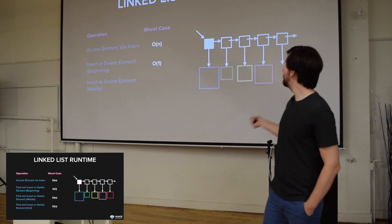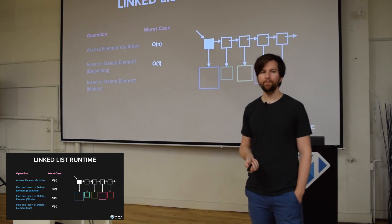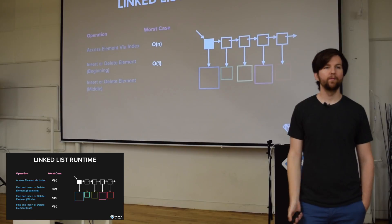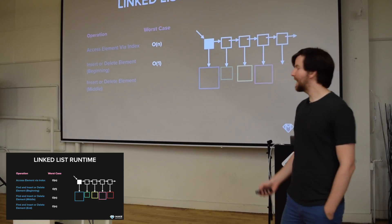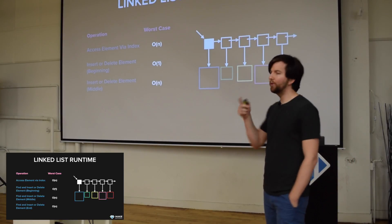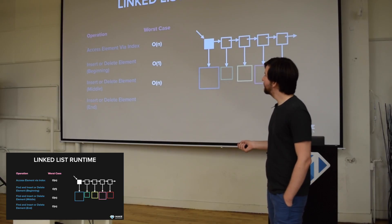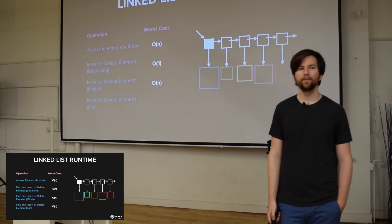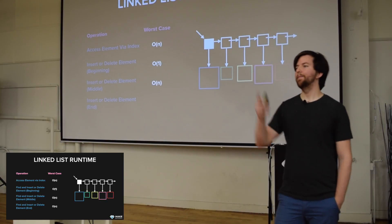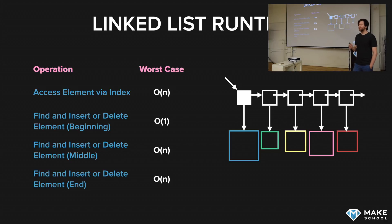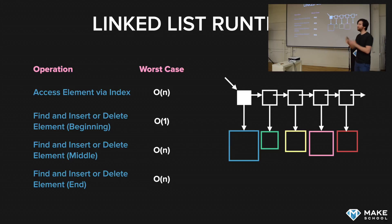If we want to insert or delete an element in the middle of the linked list, the runtime is O(N) — because we can't index into it; we have to iterate through from the head until we find the element. What about inserting or deleting at the end of the linked list? That's also O(N) for the same reason — we have to go through the whole thing to find where the last node is, then create a new node and assign the final pointer to it.